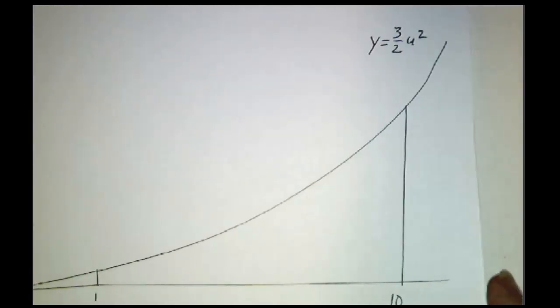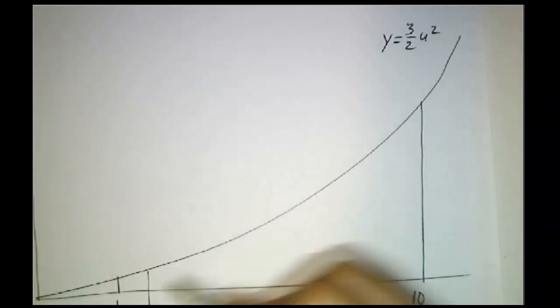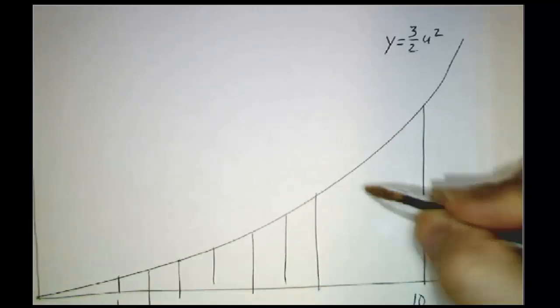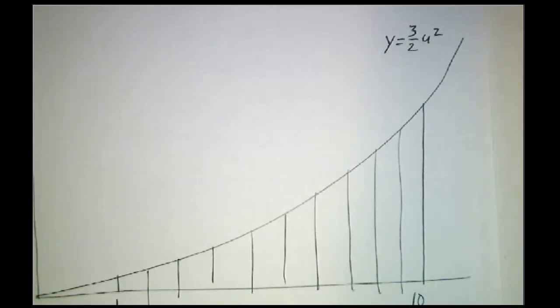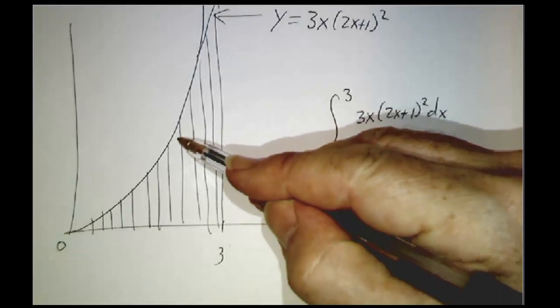Now, for every little interval of x corresponds a different interval of u. As x goes from 0 to 3, u goes from 1 to 10.